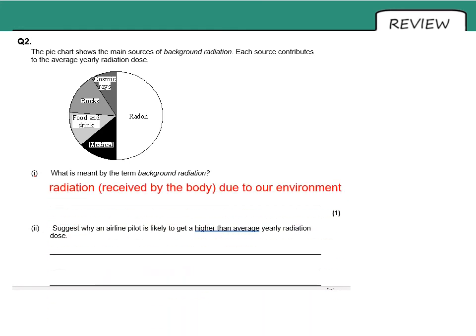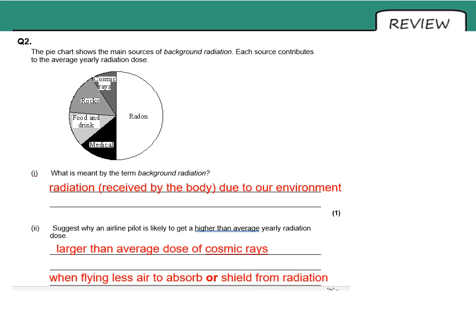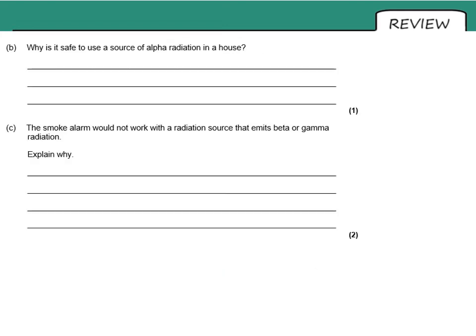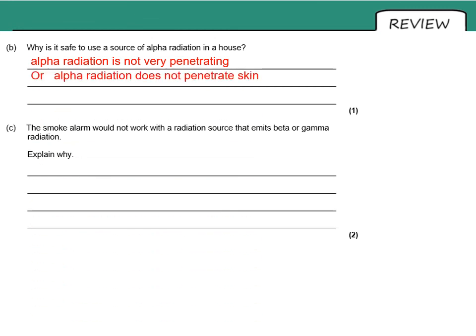Background radiation is simply that which is due to our environment. Airline pilots can get a higher dose than average — looking at the table, they're more exposed to cosmic rays. You need to make a comparison in your answer: a larger than average dose. The reason is that when flying, they are higher above the Earth, so there is less air between them and space, providing less shielding. For the smoke alarm question: the smoke absorbs or stops the alpha radiation, triggering the alarm. It is safe to use alpha because it does not penetrate skin and does not travel very far through air.